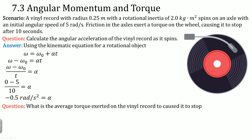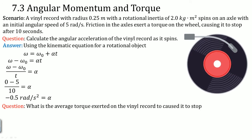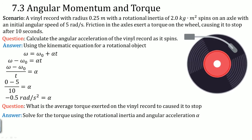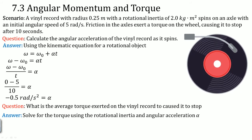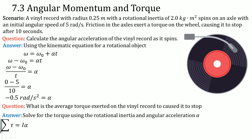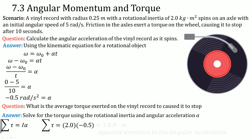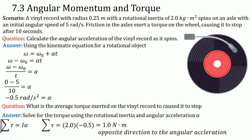The last question: what is the average torque exerted on the vinyl record that caused it to stop? The approach uses the torque equation with rotational inertia and angular acceleration: the summation of torque equals I times angular acceleration. Plugging in the values — making sure to use the negative angular acceleration — gives 1.0 newton meter.